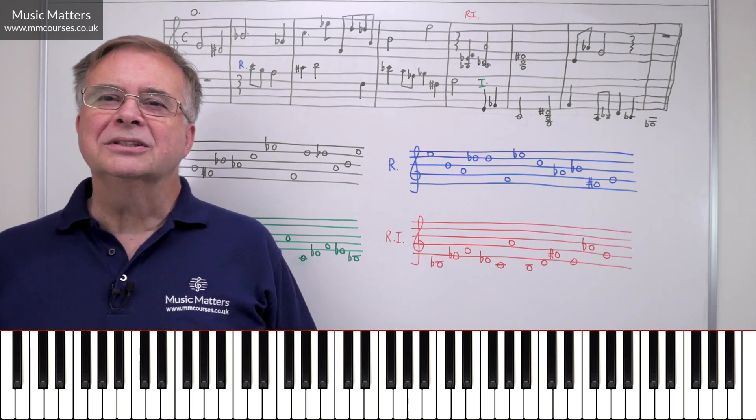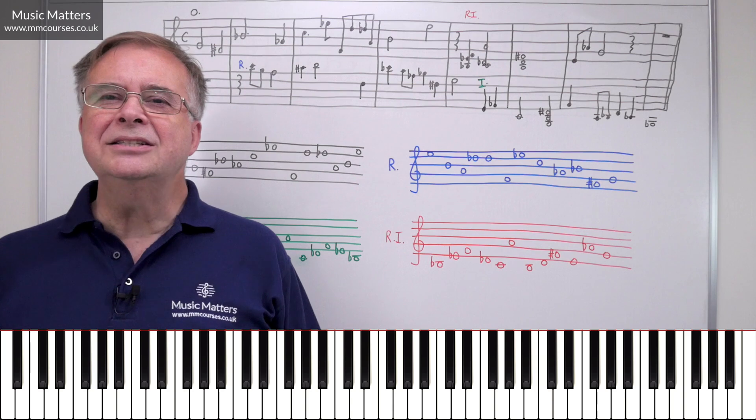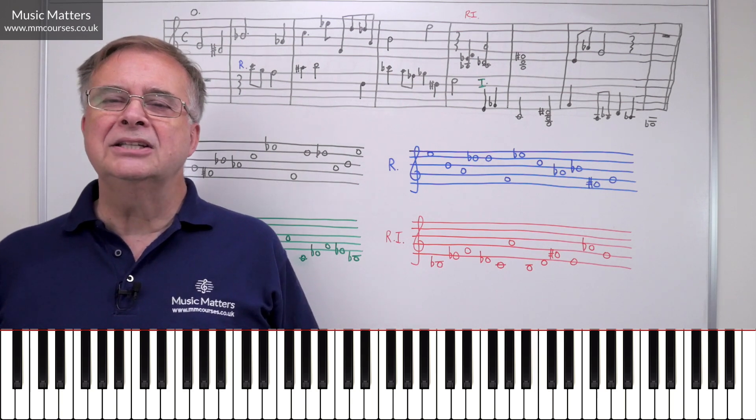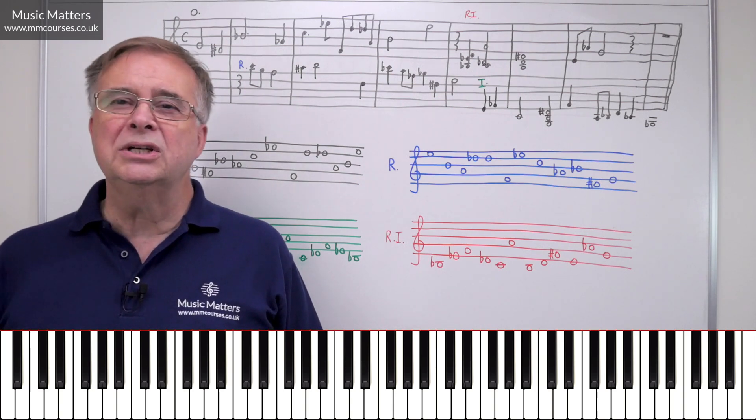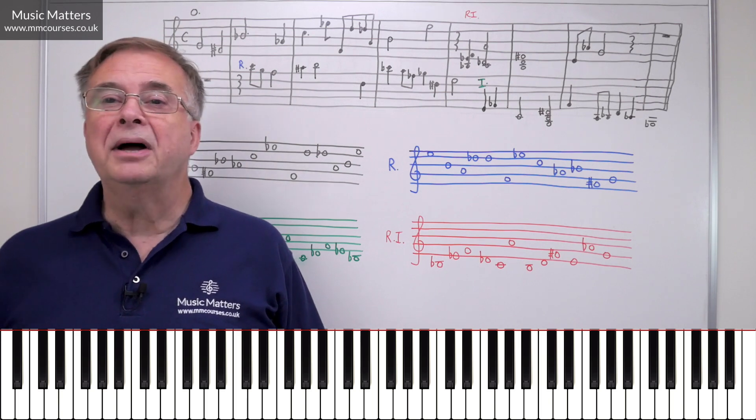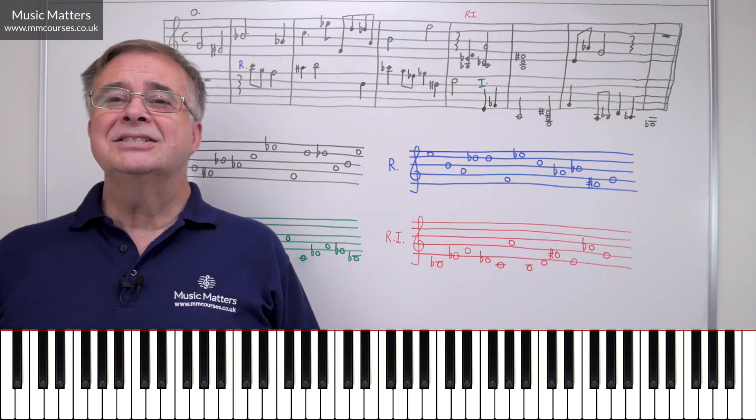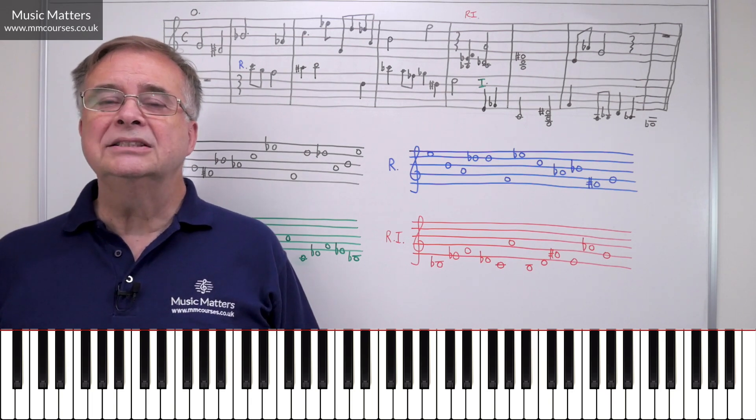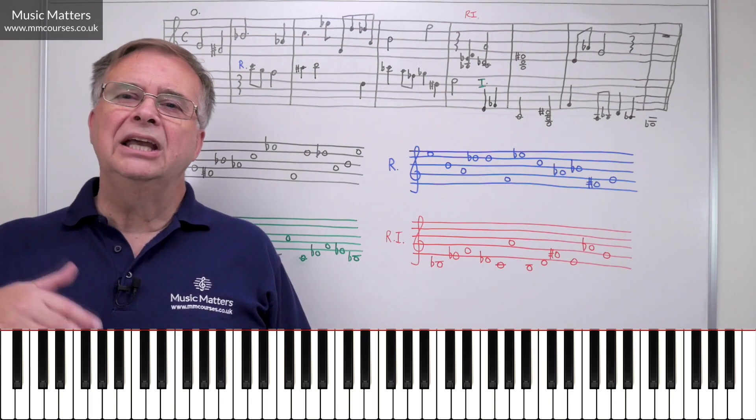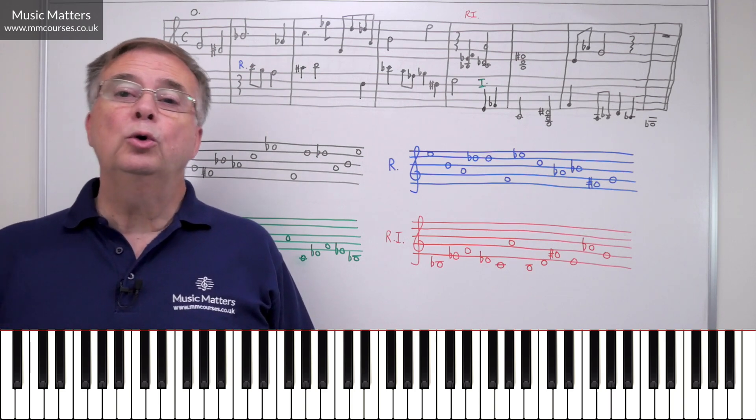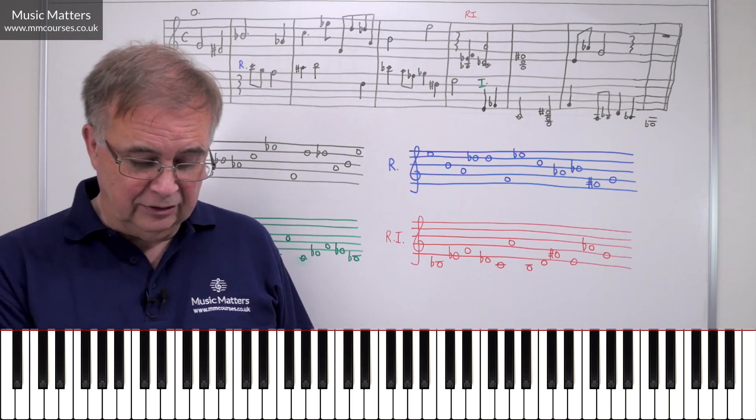All in response to the kind of tonal crisis that had come about at the end of the 19th century, beginning of the 20th century, when the whole system of major and minor keys have broken down. Along comes Schoenberg and says, let's just get this organized in some way that effectively gives equal rights to all 12 semitones of the scale.